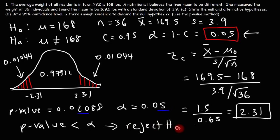That's how you use the p-value method. With a 95% level of confidence, we cannot accept the null hypothesis that the average weight of all residents in town XYZ is 168 pounds. There is enough evidence to discard the null hypothesis.